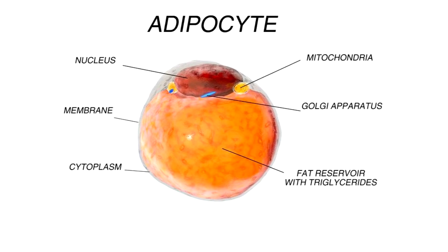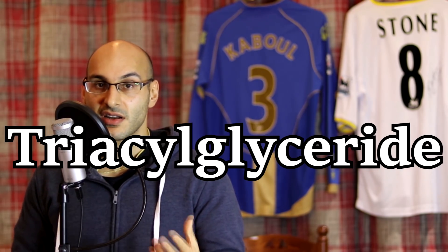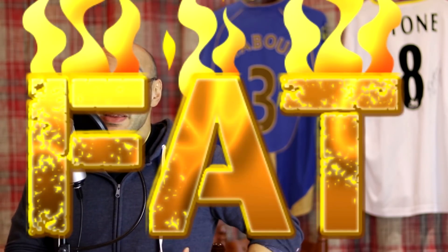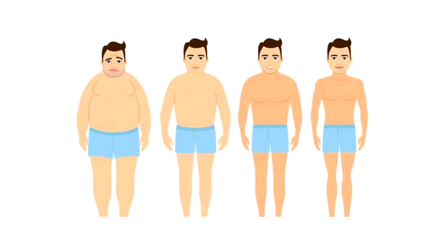Adipose tissue comes in different forms and contains adipocytes, which are the cells within adipose tissue. These cells contain stored fat, which comes in the form of triacylglyceride — a molecule with a glycerol backbone and fatty acids. When the fatty acids are disconnected from the glycerol backbone, they can be burnt in the mitochondria to produce energy. The fat within your cells can decrease and increase in size in response to your energy balance: a caloric surplus will lead to increased fat storage, whereas a caloric deficit can contribute to a decrease in fat cell size.